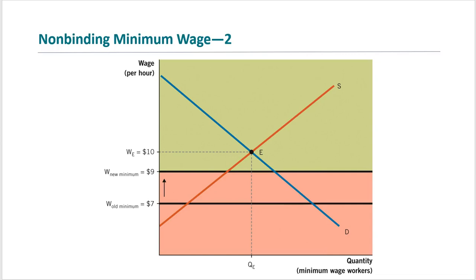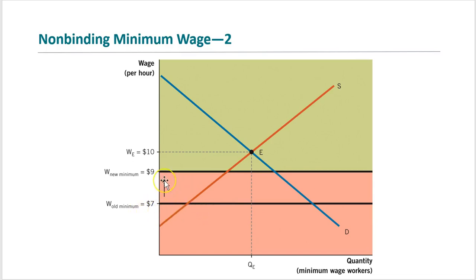Let's look at the non-binding minimum wage case. Without a minimum wage, the equilibrium wage is $10 and QE is the equilibrium quantity. The old minimum wage is $7; the government increases the minimum wage to $9. Since the new minimum wage is still below the equilibrium wage, there is no effect on the market.